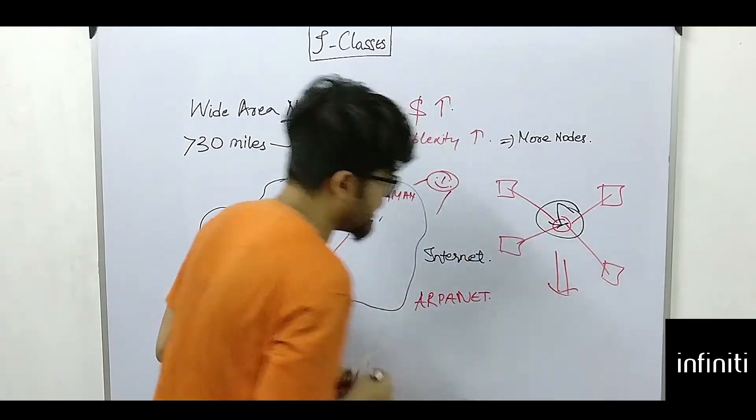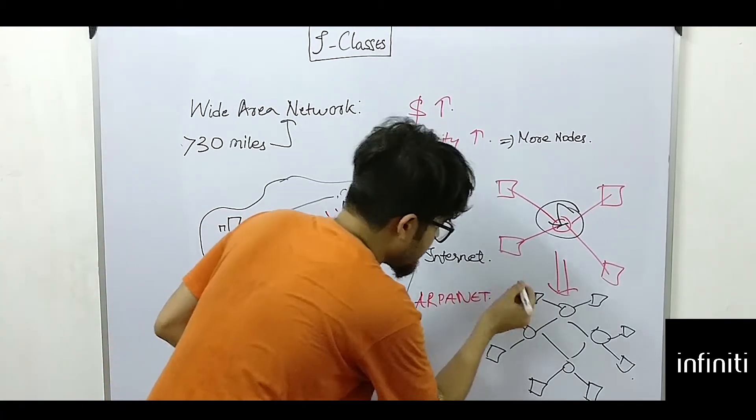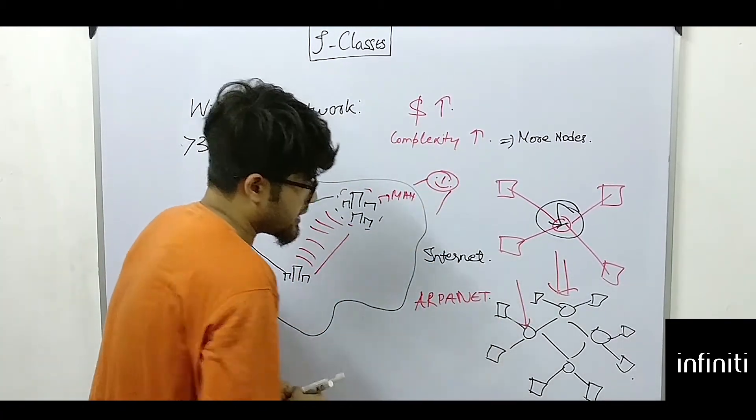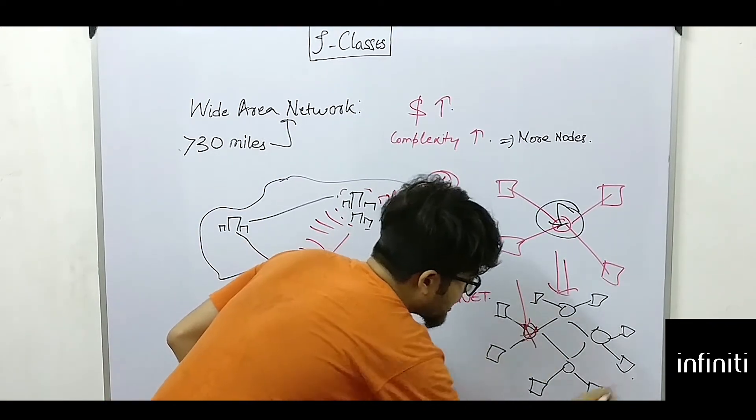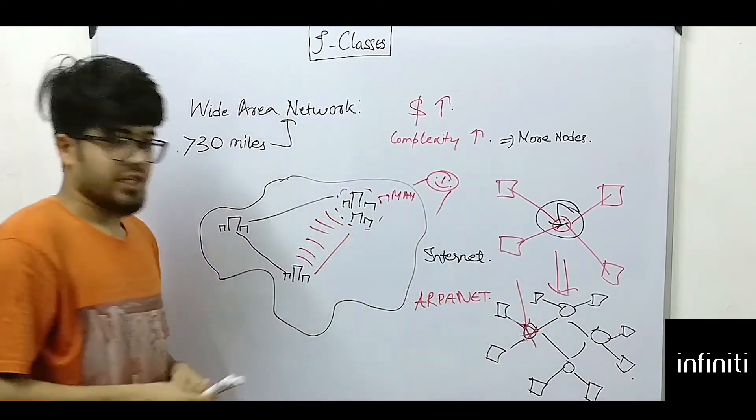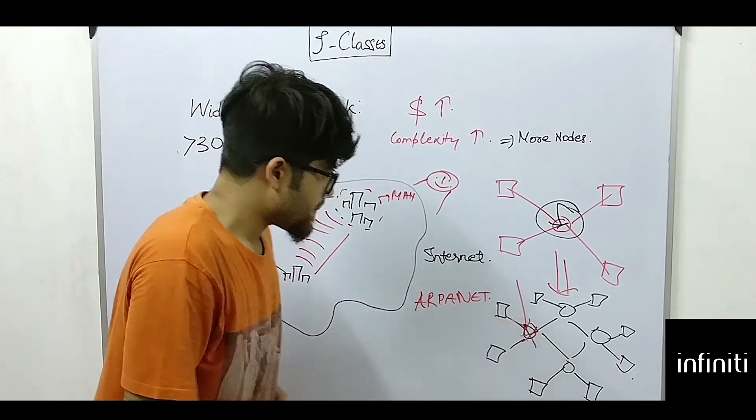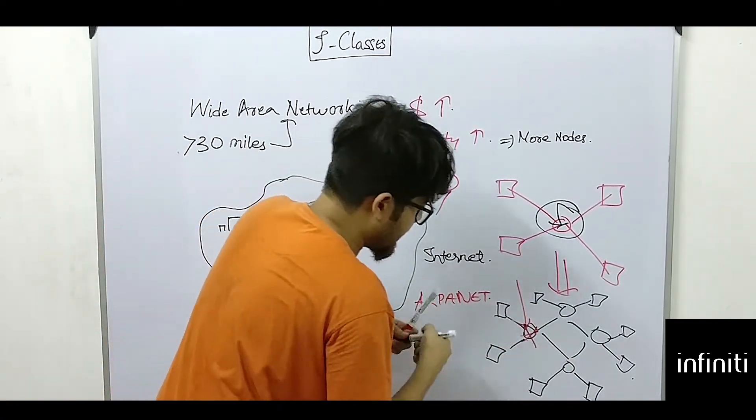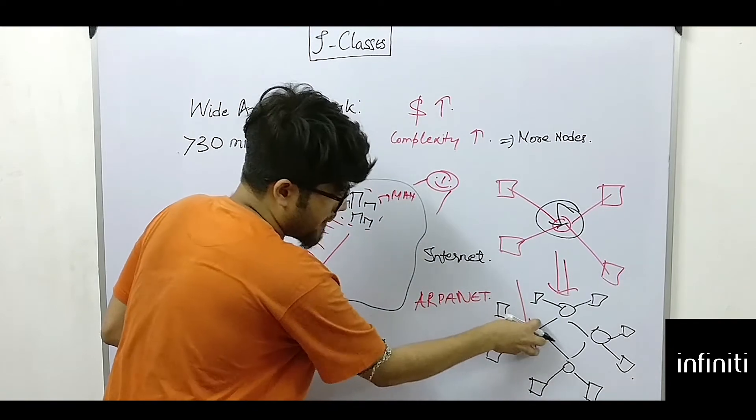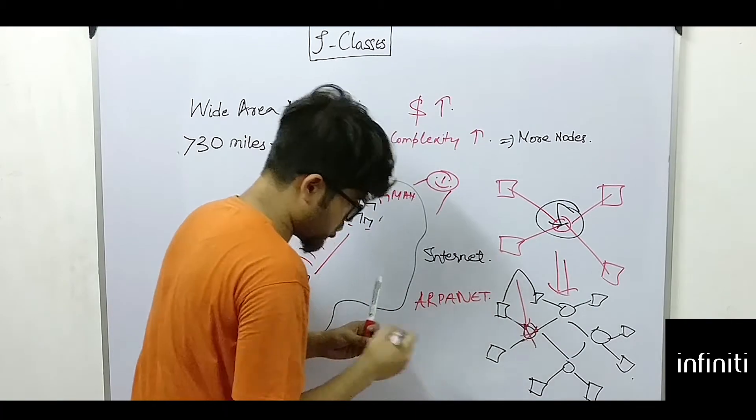To solve this, the Ministry of Defense developed a distributed network, that is in which even if the bombs fall here, this network may get destroyed, but others will function perfectly. So even if there is a failure here, there may be a different path through which it may be connected. Like if this particular server gets bombed, this may be connected like this.